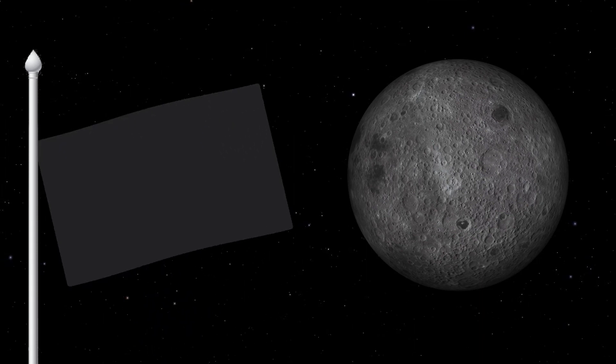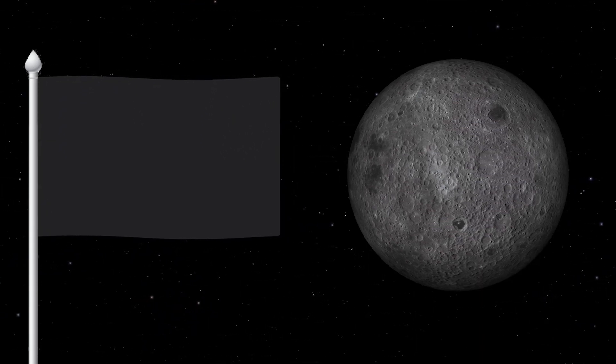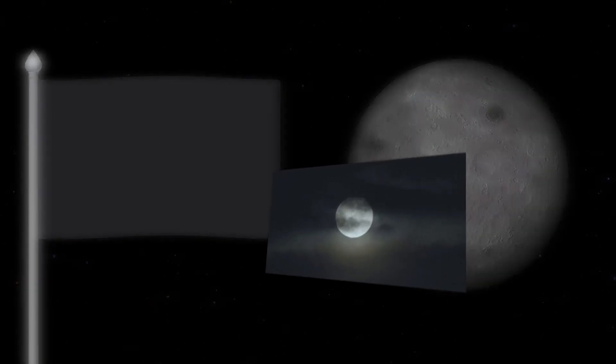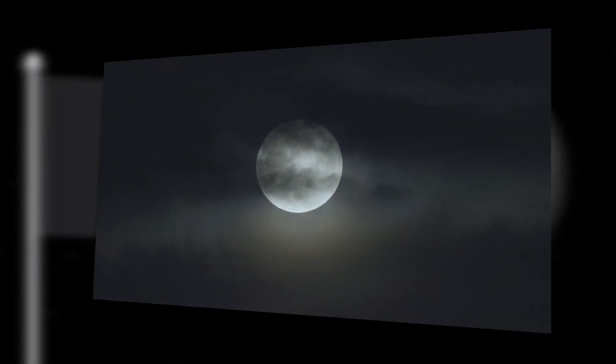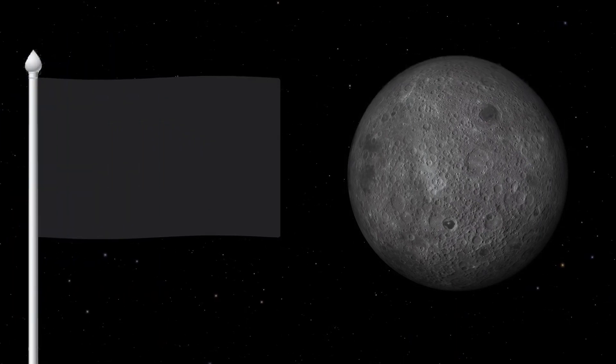First of all I'd like to make a black background for the flag because it's very dark in space. Did you know that the surface of the moon reflects quite a significant amount of sunlight? So even in the darkness of space the moon can be quite bright.